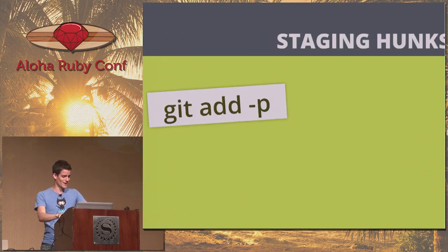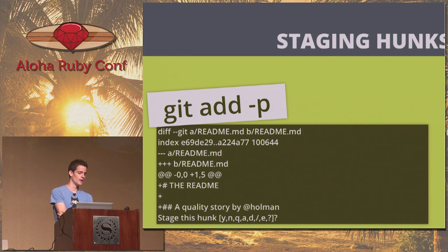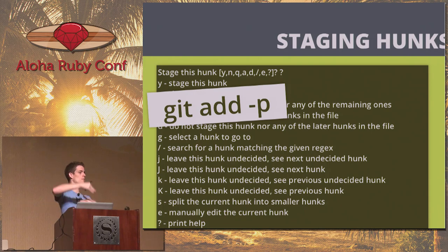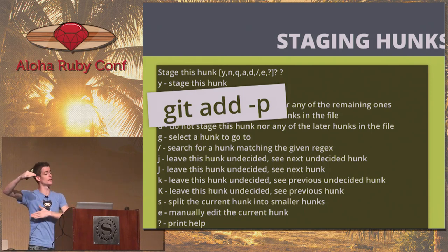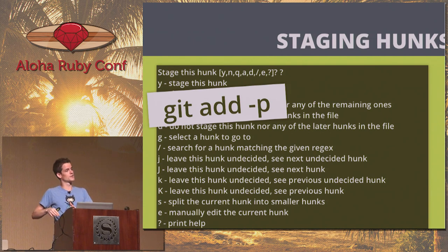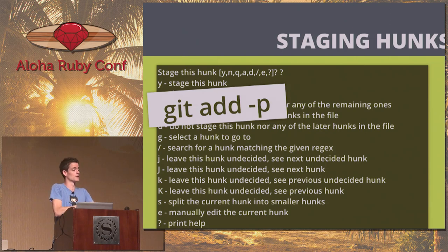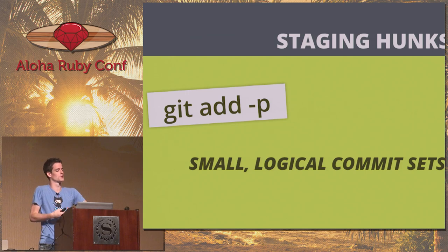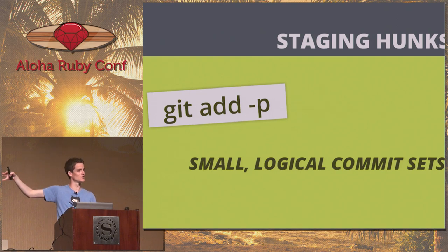Staging hunks is probably not what you think. Git add -p is really cool. When you're adding code that's ready to be committed, it'll show you options where you can say yes, I want this particular group of lines, I want this added and the other stuff still unstaged. You can stage particular hunks and commit those on their own — a smart way to do logical commit sets where each commit is topical.